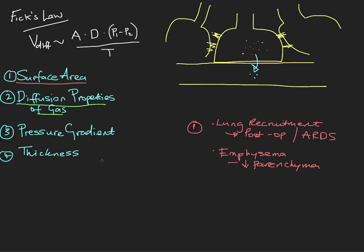In the first video we touched on and defined this formula. I gave the example of carbon dioxide and oxygen and compared those two gases. So let's compare CO2 versus oxygen. We said that the diffusion properties are inversely proportional to the square root of the molecular weight and directly proportional to the gas's solubility.